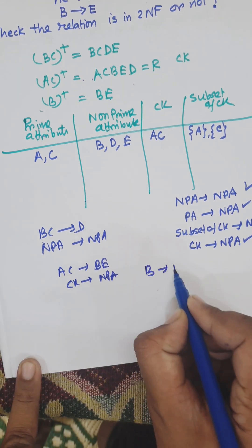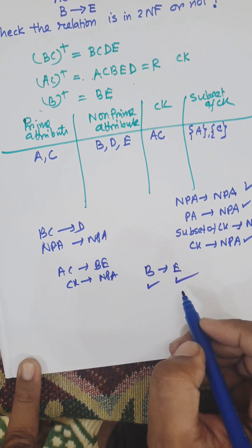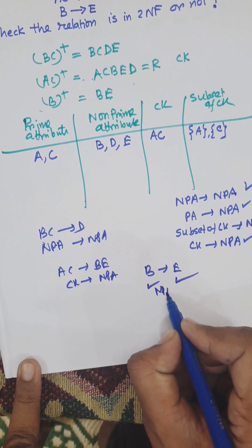Finally, B→E: both B and E are non-prime attributes. This is also allowed in 2NF.